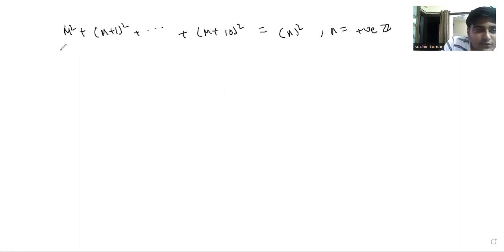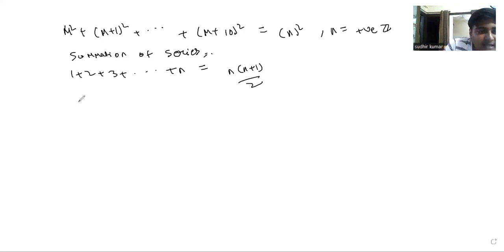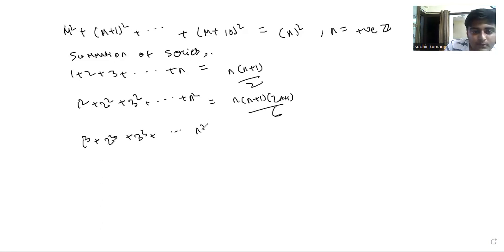The concept we need to know for this question is summation of series. The sum of first n natural numbers is n(n+1)/2. The sum of squares of first n natural numbers is n(n+1)(2n+1)/6. For basic knowledge, the sum of cubes of first n natural numbers is [n(n+1)/2]².